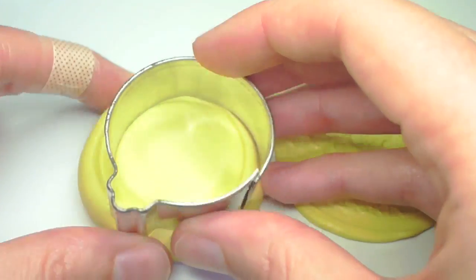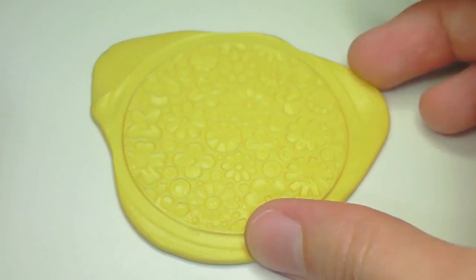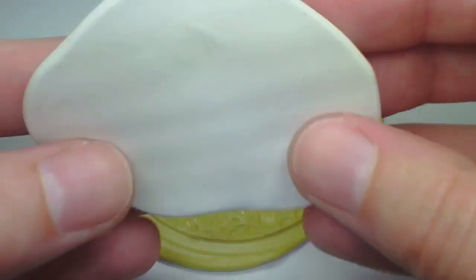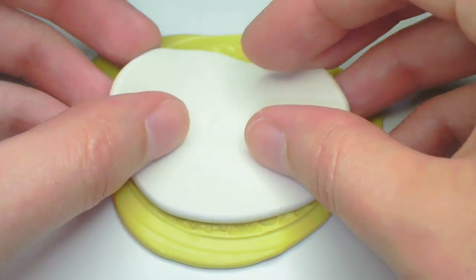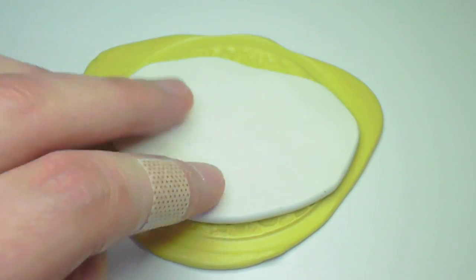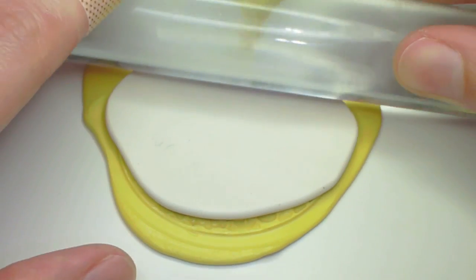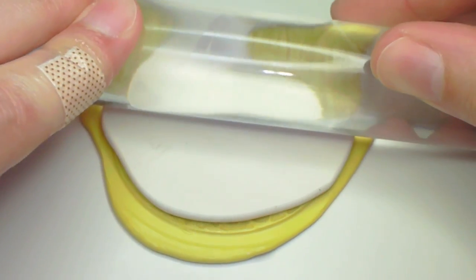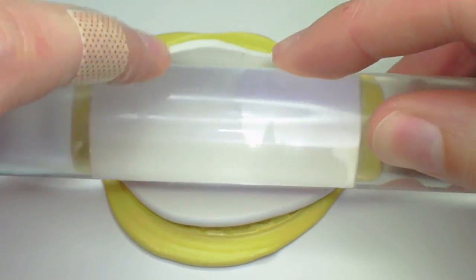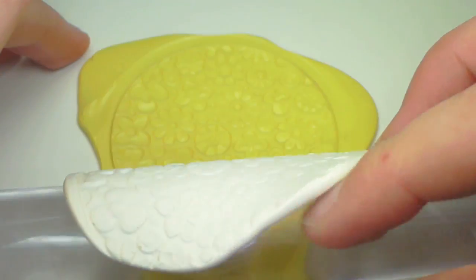You'll need a cookie cutter that's the same size as the plate. Then take some white clay that you've rolled out and press it onto the texture plate using a roller and really press down. You want to squish the texture onto the clay.